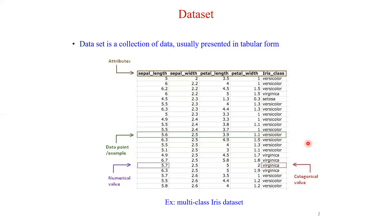Classification is the process of predicting the class label of an unknown observation, which is a categorical value. Whereas prediction is the process of predicting the value of an unknown observation, which by default is a numerical value. That is the key difference between classification and prediction.